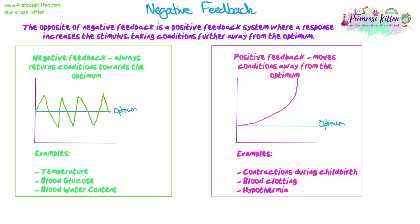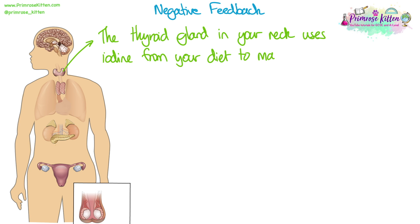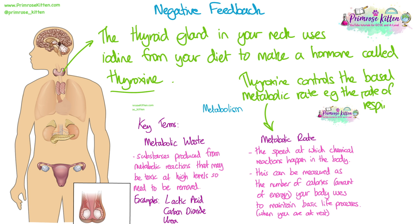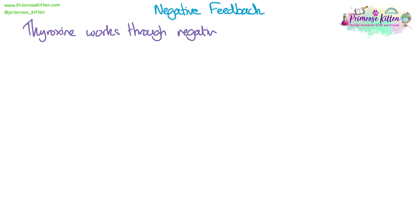Now we're going to look at a specific negative feedback example: the thyroid gland. The thyroid gland in your neck uses iodine from your diet to make a hormone called thyroxine. Thyroxine controls your basal metabolic rate - the number of calories or amount of energy your body uses to maintain basic life processes when you are at rest. So thyroxine basically controls the rate of respiration you need to produce enough energy to carry out all life processes when you're at rest, such as when you're sat down or sleeping.